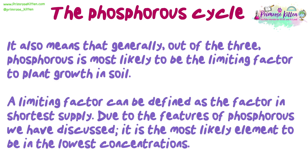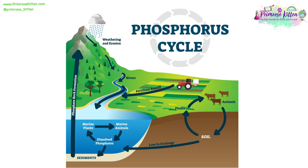A limiting factor can be defined as the factor in shortest supply. Due to the features of phosphorus we have discussed, it is the most likely element to be in the lowest concentrations. As with all the cycles, you need to have a diagram of some kind in your notes. In your exam, you could be asked to label missing reservoirs or processes in the cycle.